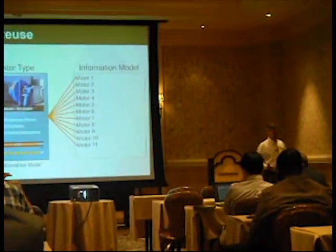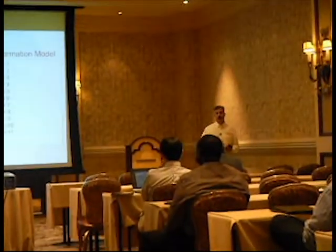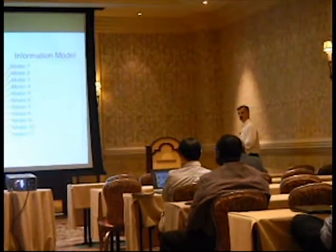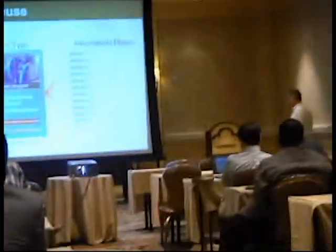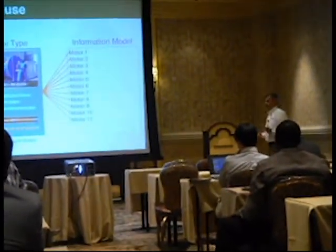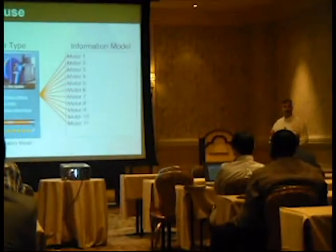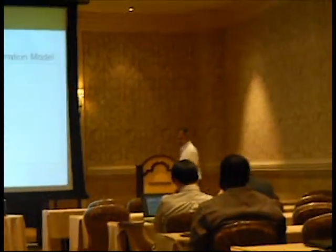With an information model, we don't create HMI screens for a particular instance of things anymore — we create it for a type of thing. There's a gentleman here who has 20,000 assets of some sort that he's monitoring. He can create an HMI screen for a type of thing and then reuse that with any instance of that all the way through his organization. And it just flows naturally. It just works.